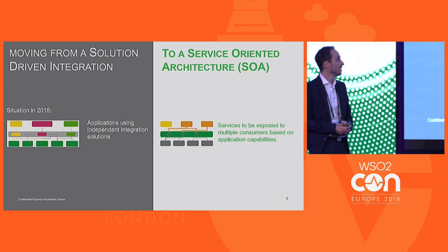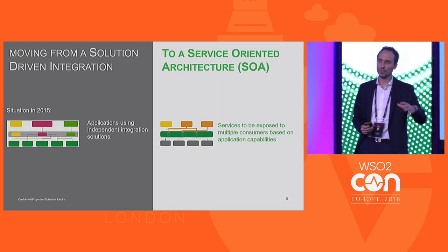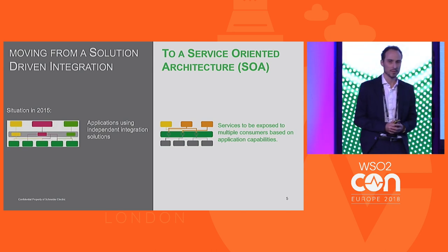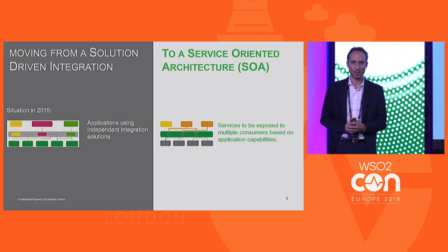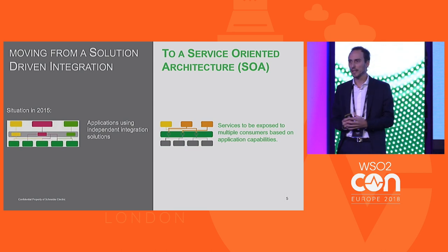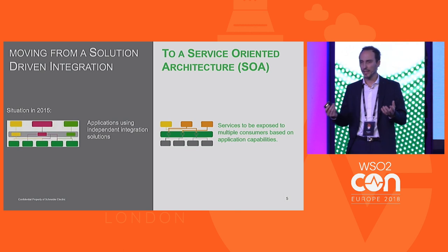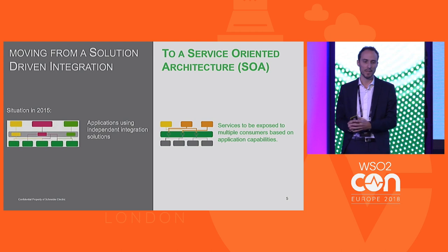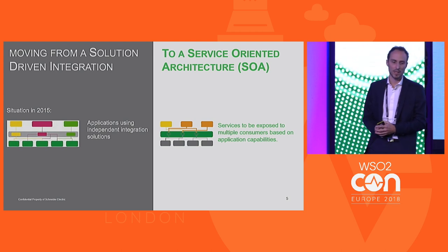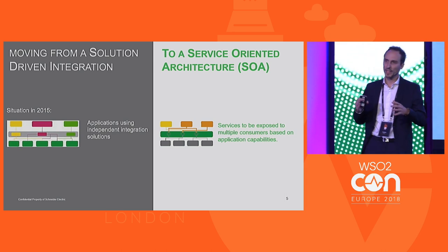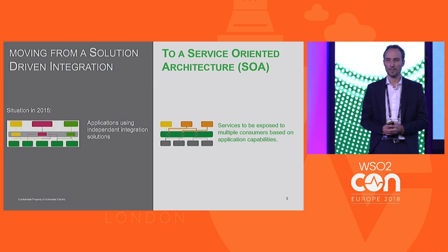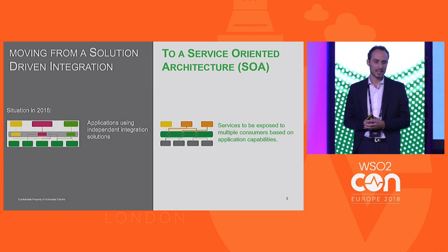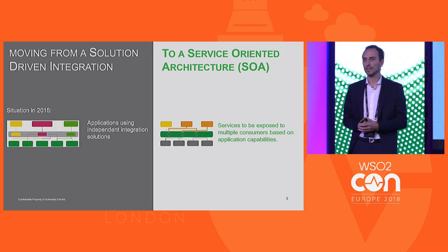Our story starts in 2015, where we decided to move from a solution-driven integration to a service-oriented architecture. The main drivers were: first, to give our customers a standardized way to consume services; second, to hide the complexity of our source systems with an abstraction layer, so that backend updates, version changes, or full replacements could be transparent to consumers. We also wanted usage control — managing all subscriptions in one place, applying quotas, policies, and gathering data to observe and analyze our flows.